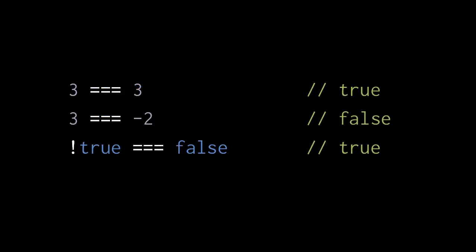Here, the first line returns true because three is equal to three, the second line returns false because three is not equal to negative two, and the third line returns true because the not operator has the higher precedence. Not true returns false, and then false is equal to false, returning true.